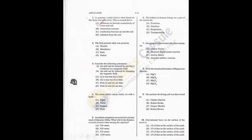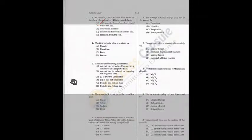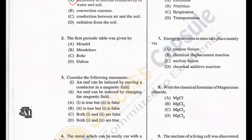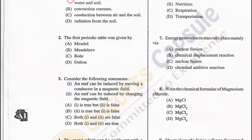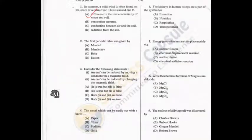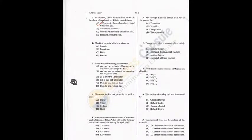Question 2: The first periodic table was given by Mendeleev. So B is the correct answer. Neil Bohr gave the iconic atomic model proposed in 1913.